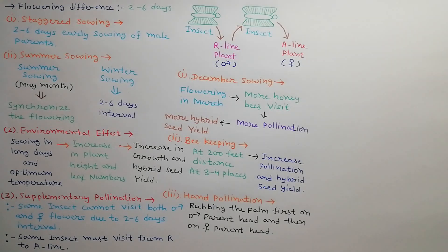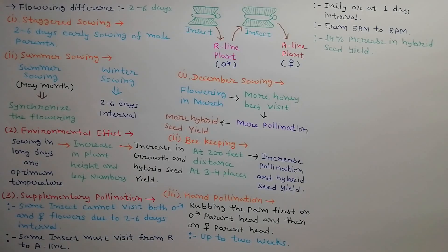Hand pollination also helps to supplement pollination. Gently rubbing the palm first on the male parent head and then on the female parent head can help to increase the pollination percentage. Rubbing should be done for 2 weeks daily or at 1 day interval in morning time from 5 am to 8 am. This increases the hybrid seed yield up to 14 percent.